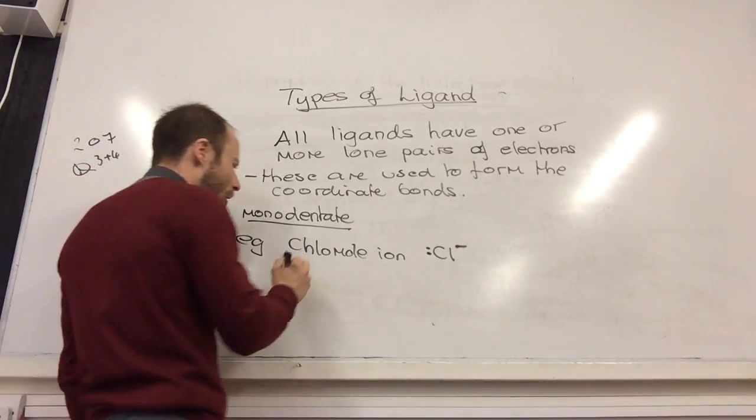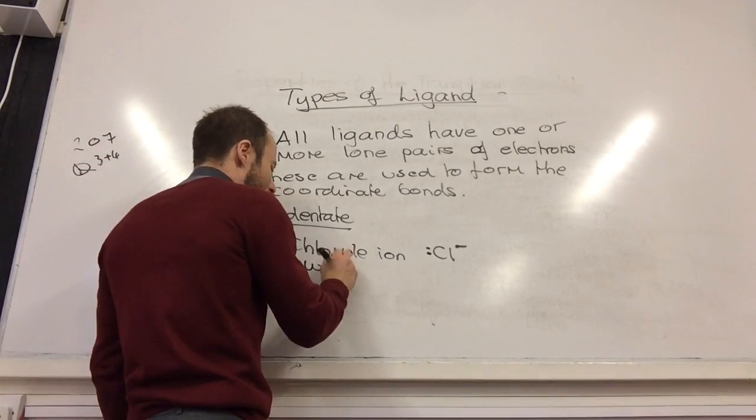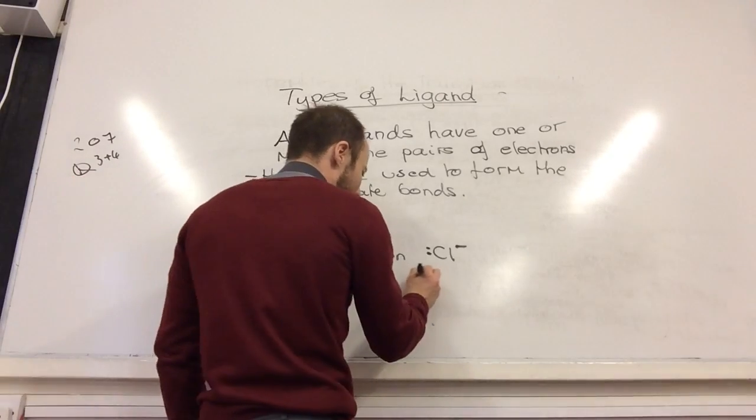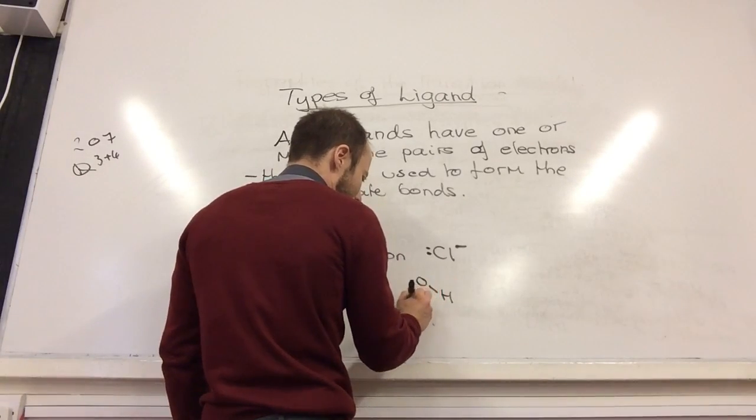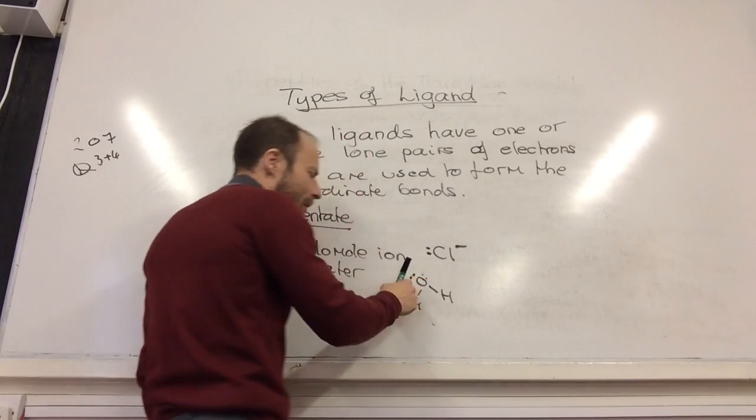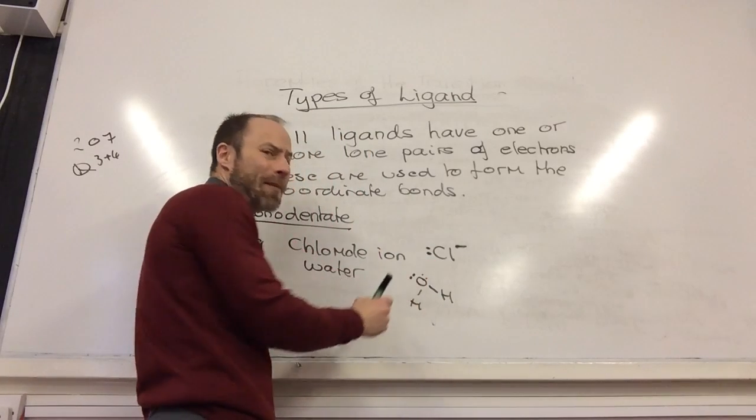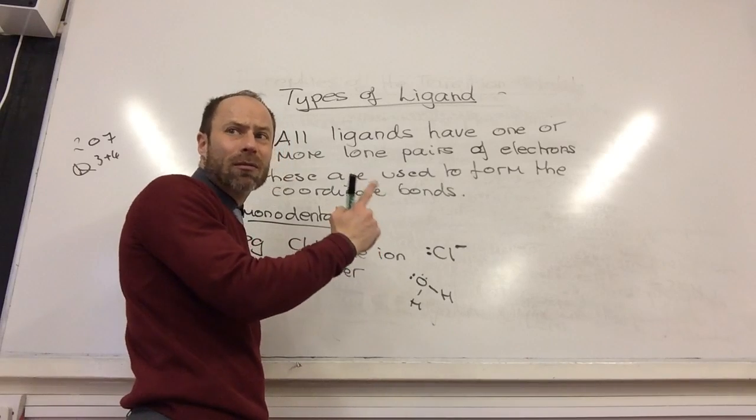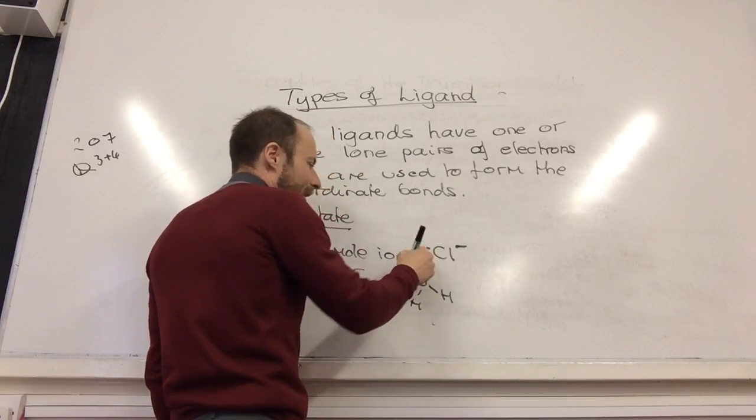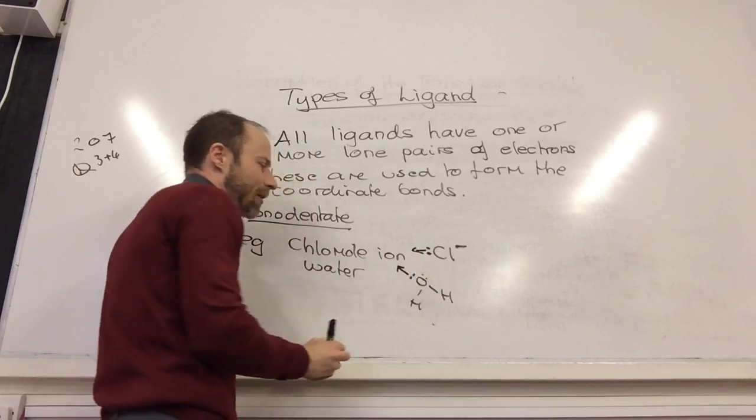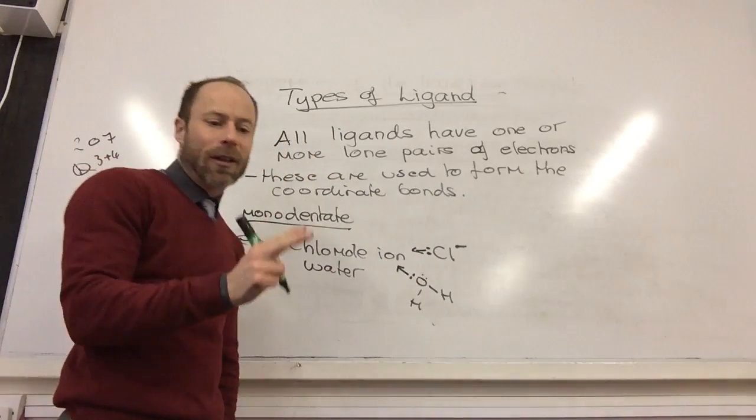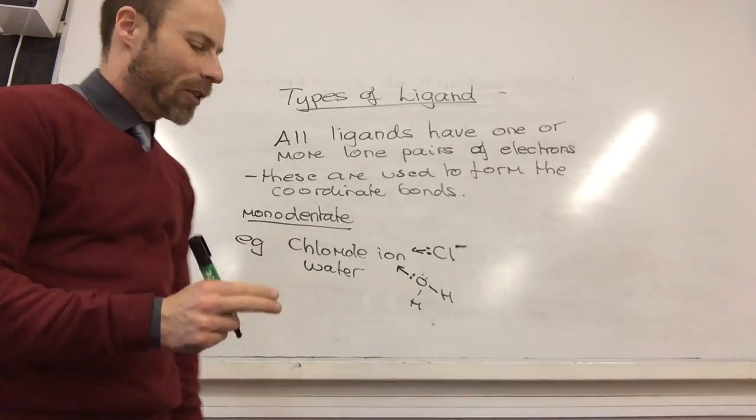So another common one, as a molecule, is going to be water. Water, we know, on the O has got - it's actually got two lone pairs, but it can only ever, if they're on the same atom, it can only ever use one to form the coordinate bond. So if I'm going to put a little arrow next to the lone pair, remember an arrow shows a coordinate bond.